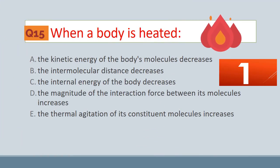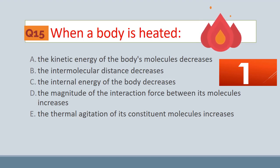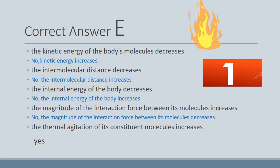Question No. 15. What happens when a body is heated? A. The kinetic energy of the body's molecules decreases. B. The intermolecular distance decreases. C. The internal energy of the body decreases. D. The magnitude of the interaction force between its molecules increases. E. The thermal agitation of its constituent molecules increases. The correct answer is E. Yes, the thermal agitation of its constituent molecules increases.